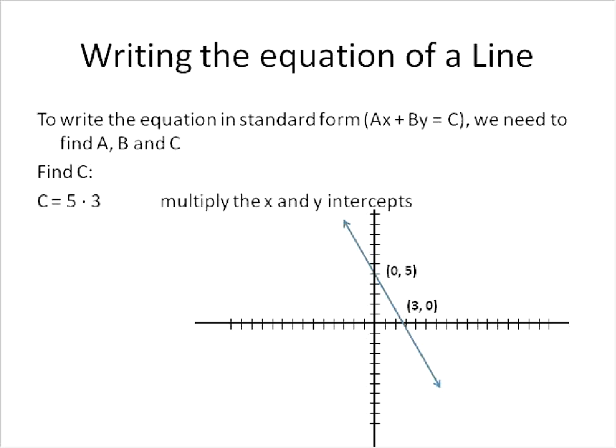When writing the equation of a line in standard form, we need to find these values A, B, and C. After you know the intercept points, in this case it's 0, 5 and 3, 0, you just multiply the x-intercept and the y-intercept, and that will give you the value for C. So in this case, 5 times 3 is equal to C, so C is equal to 15. C is the easiest one to find. As soon as you have the x and y intercepts, multiply them together and you get the value of C.